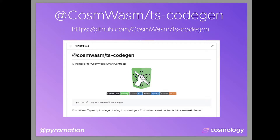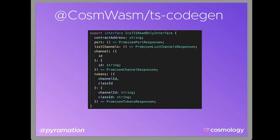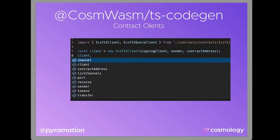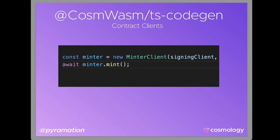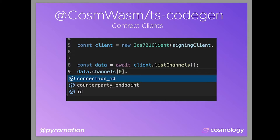CosmWasm TS CodeGen effectively generates interfaces and types for your smart contract. This is really great because in IDEs like VS Code, it will give you an autocomplete interface to visually help you understand what the methods are for your various queries. It also makes very clean and simple interfaces for interacting with your smart contract, and even when you're getting responses back when you're making requests, it also types things all the way down.